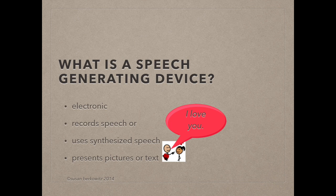AAC can involve no technology, such as sign language or use of pictures or word books, or it can involve a spectrum of technology solutions. Voice output devices, also called speech generating devices, are those electronic devices that speak. This can be recorded speech where someone other than the user records their voice into the message cells, or it can be synthesized speech where the computer synthesizes human voices.